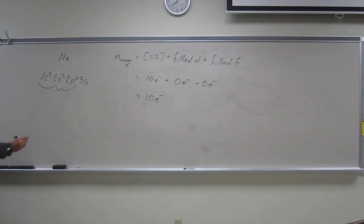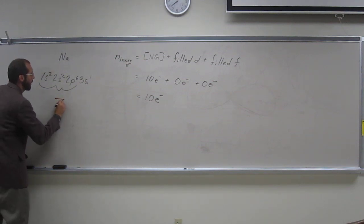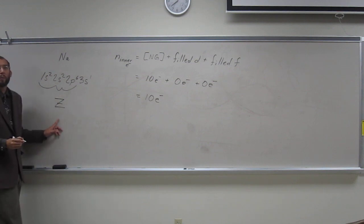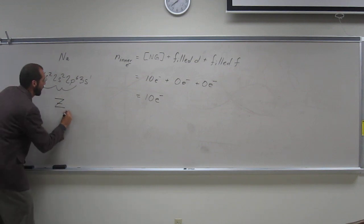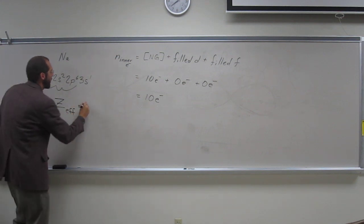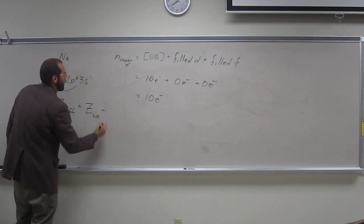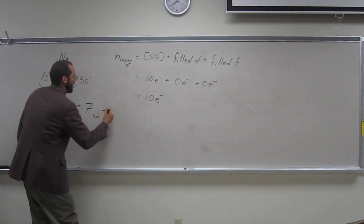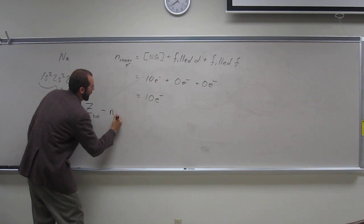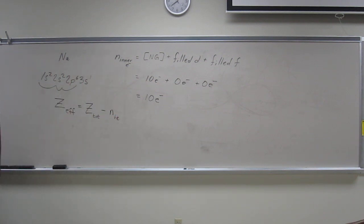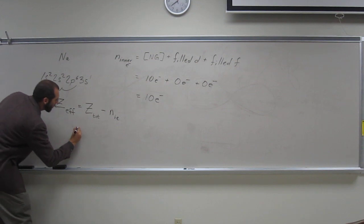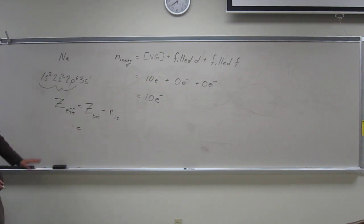So, how do I figure out the effective nuclear charge? Remember, capital Z is nuclear charge. Z effective is going to be the total nuclear charge minus the number of inner electrons, or core electrons. Z total for sodium, we have to again look at the periodic table, it's 11.